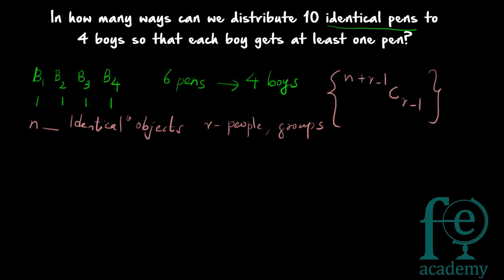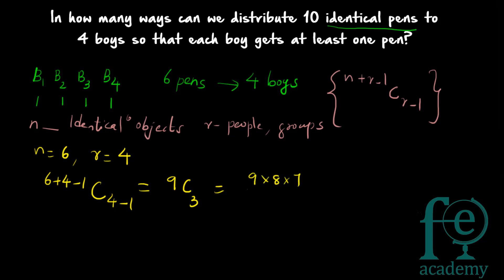Applying the formula here: N is equal to 6 (we have 6 identical pens remaining) and R is equal to 4 (4 boys). So the answer is 6 plus 4 minus 1, C 4 minus 1, which equals 9C3. That is 9 × 8 × 7 divided by 1 × 2 × 3. Cancelling gives 12 × 7 = 84. So there are 84 ways to distribute 10 identical pens to 4 boys such that each boy gets at least 1 pen.